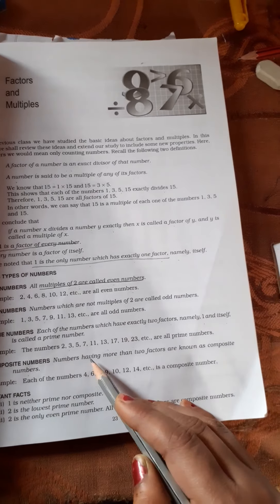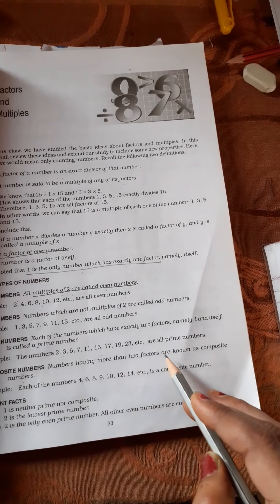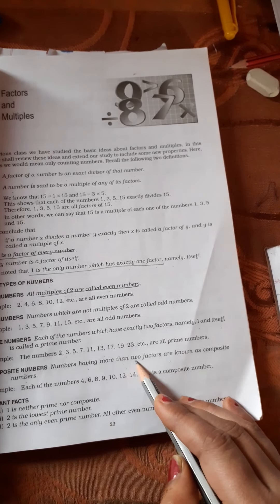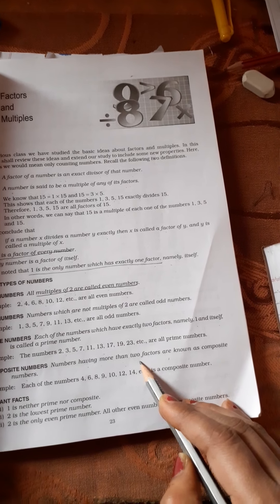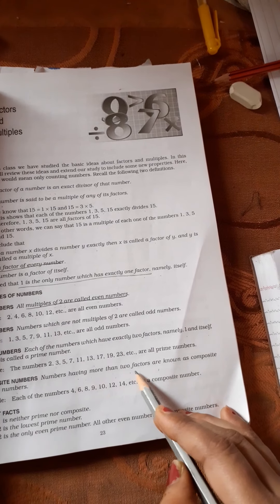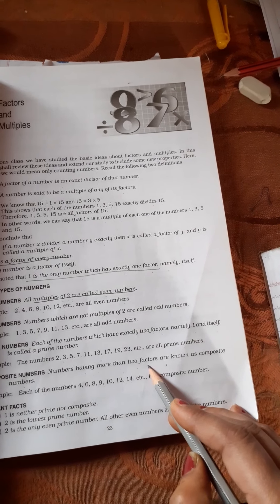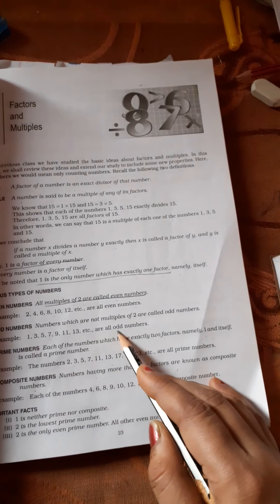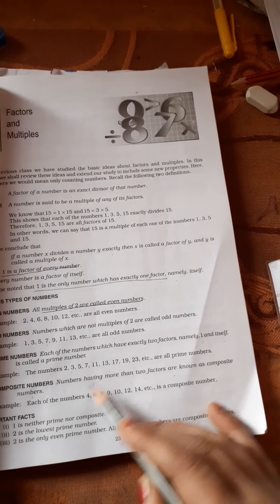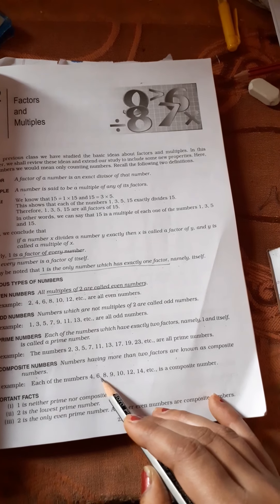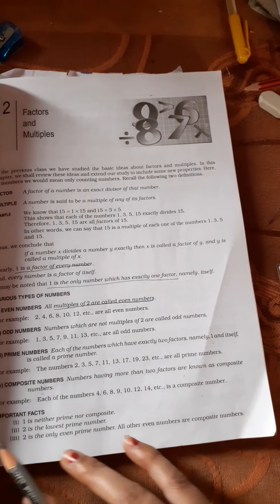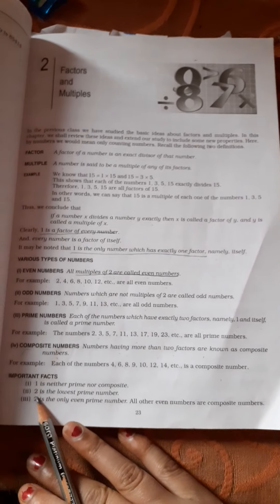Composite numbers are numbers having more than 2 factors. If a number has more than 2 factors, then it is a composite number. Prime numbers have exactly 2 factors. Each of the numbers 4, 6, 8, 9, 10, 12 is a composite number because their factors are more than 2.